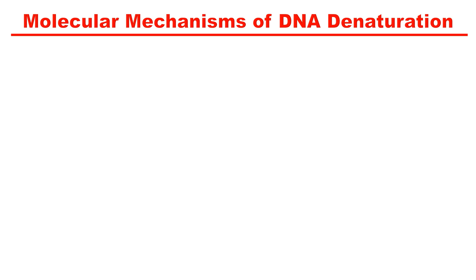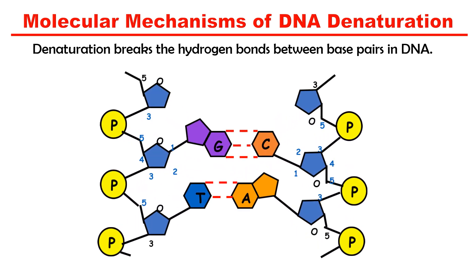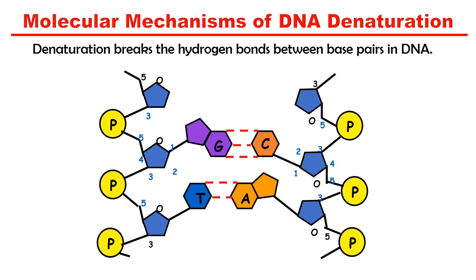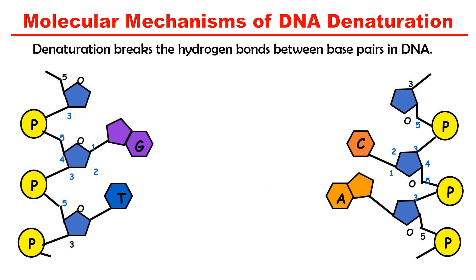Now, what is the molecular mechanism behind DNA denaturation? The basic reason is the breakage of hydrogen bonds between the base pairs. As you can see, the two strands have a sugar-phosphate backbone and nitrogenous bases. There are three hydrogen bonds between guanine and cytosine, and two hydrogen bonds between thymine and adenine. During denaturation, these hydrogen bonds get broken, causing the two strands to separate.